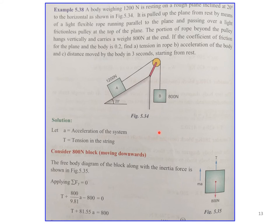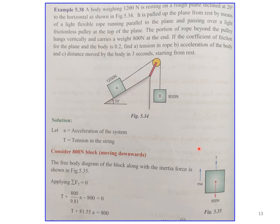For the 800 N hanging block: self-weight is marked, inertia force acts upward (since block moves downward), and tension T is in the string. Applying ΣFy = 0: T − 800 + m·a = 0, giving equation 1, where m = 800/9.81.